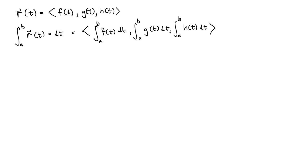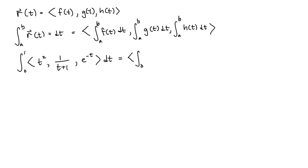Let's see this with an example. Suppose we have the definite integral from 0 to 1 of the vector function with an x component of t squared, a y component of 1 over t plus 1, and a z component of e to the minus t. To evaluate this, we evaluate the definite integrals of each component: the integral from 0 to 1 of t squared dt for x, 1 over t plus 1 dt for y, and e to the minus t dt for z.